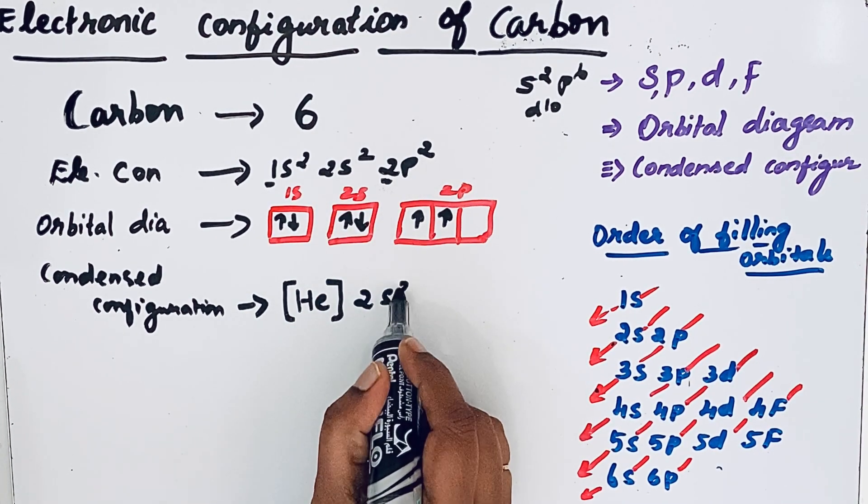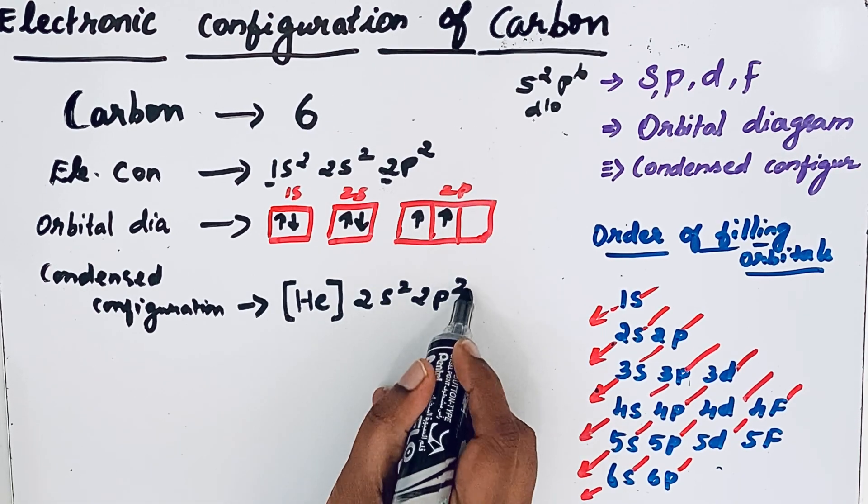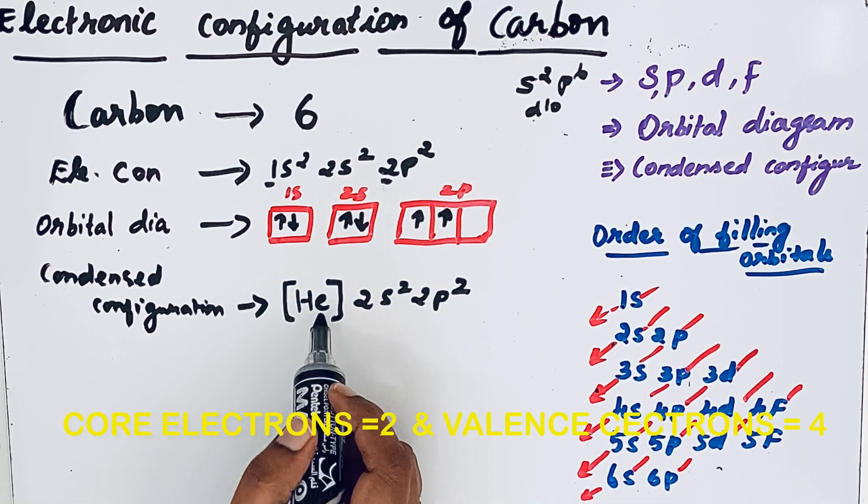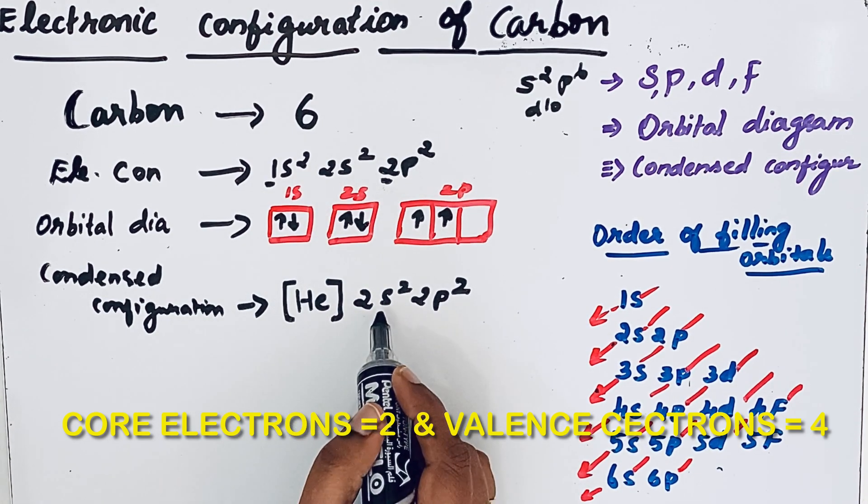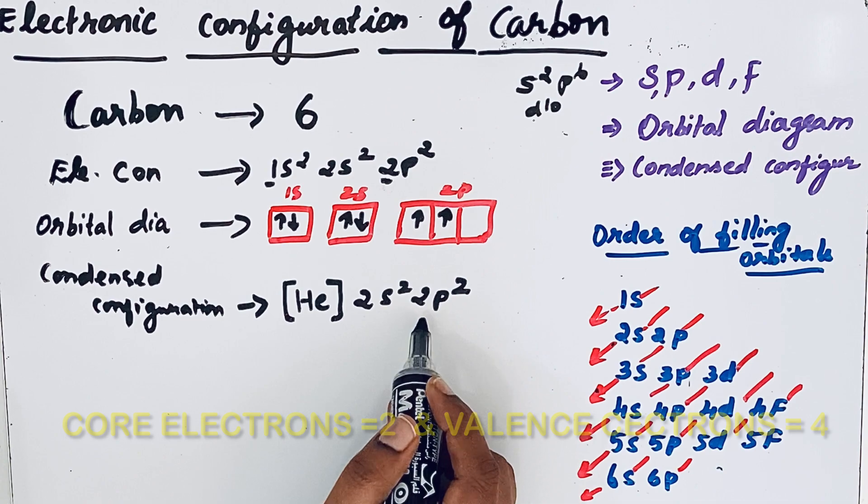We are writing as helium 2s2 2p2. The electrons inside the bracket, that is 1s2 electrons, are called core electrons. The remaining electrons which are outside are called valence electrons.